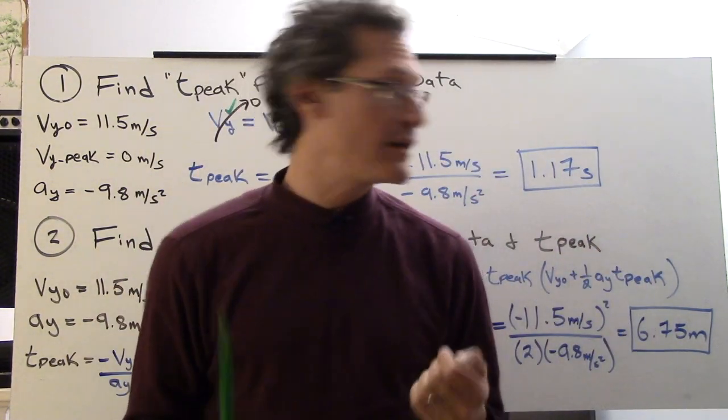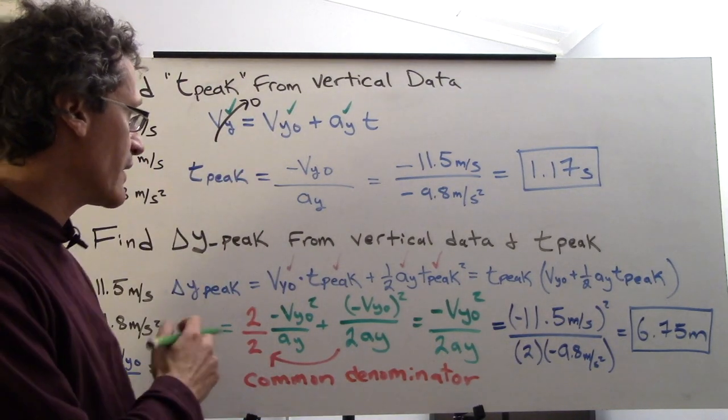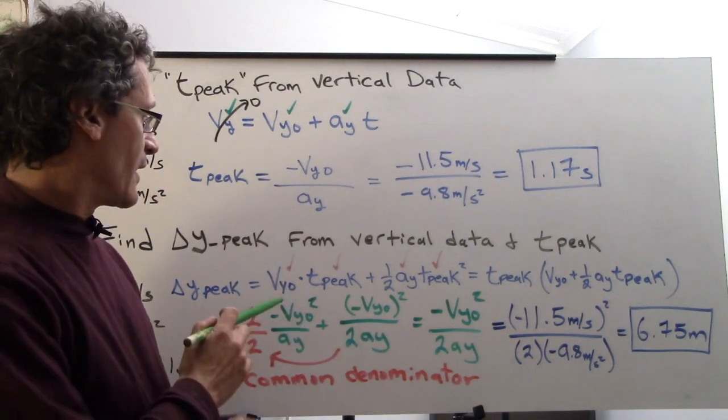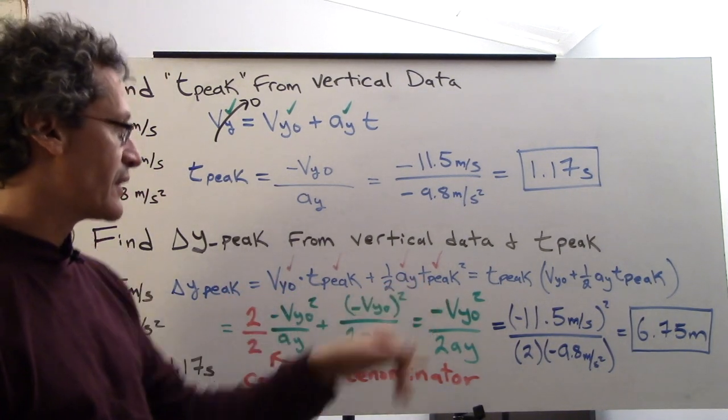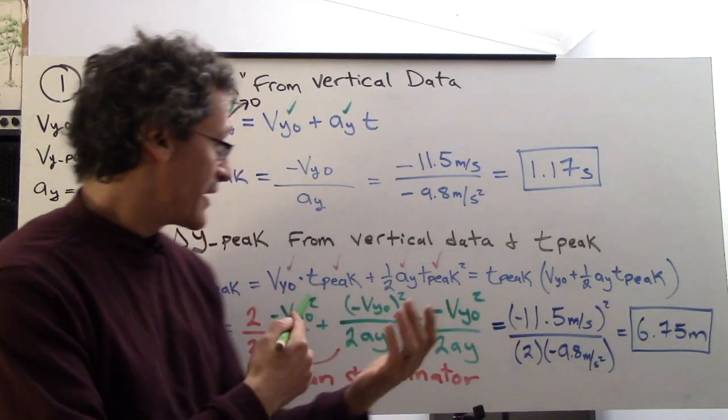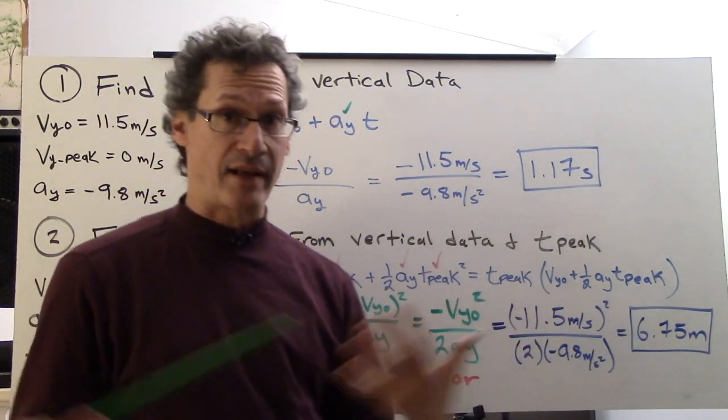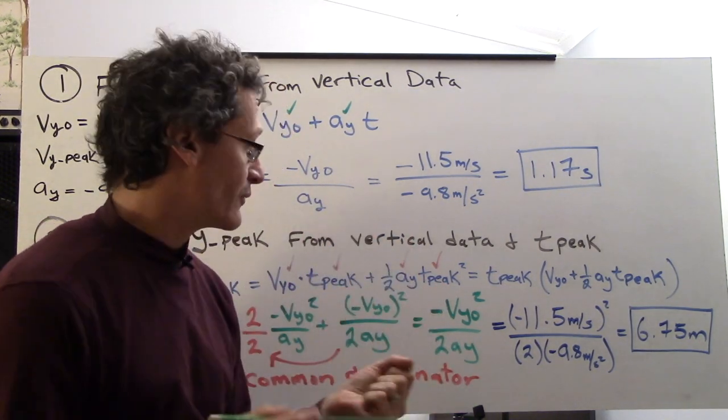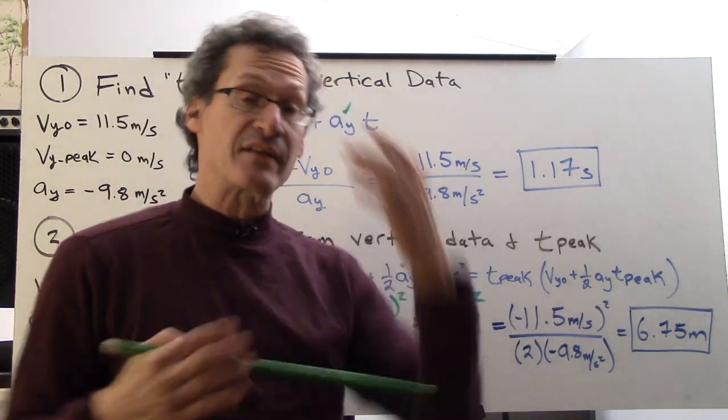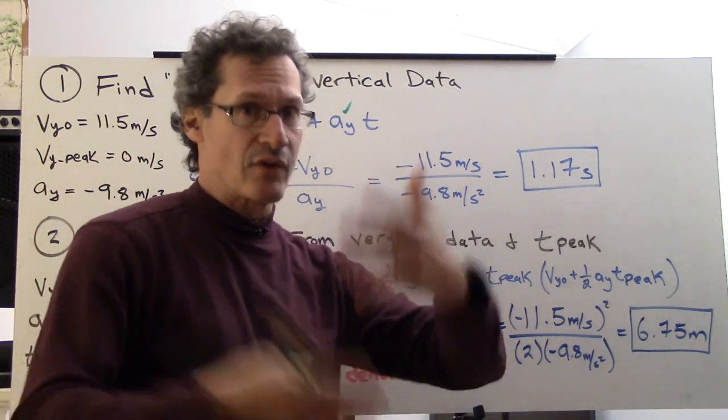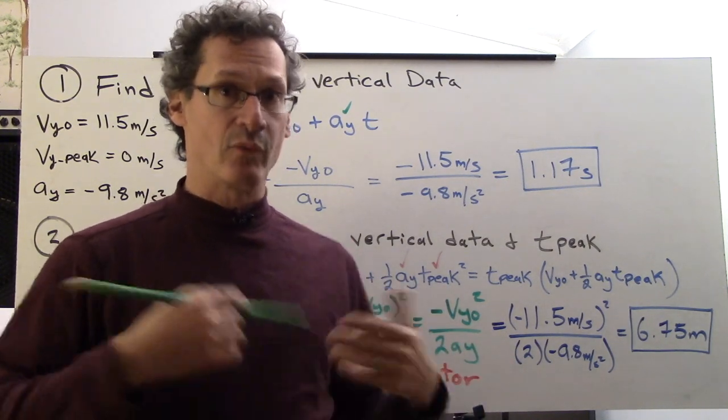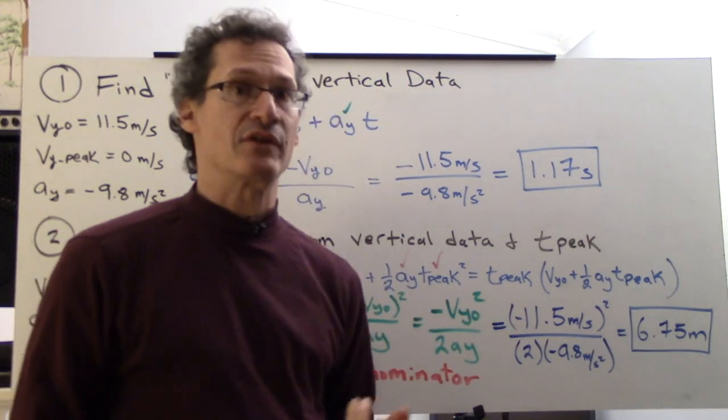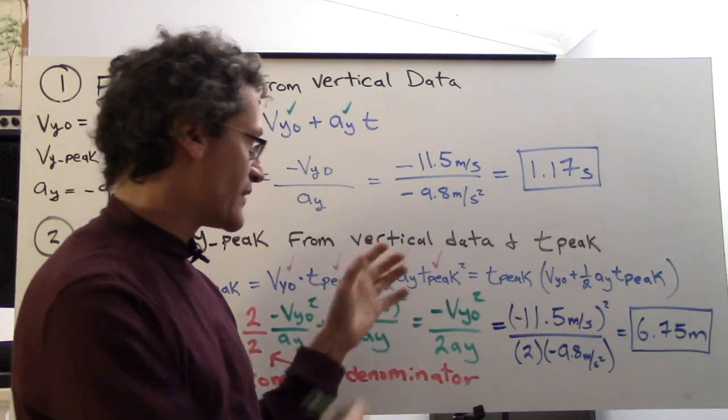Let's find delta y-peak using that information. I decided to choose the second equation with time and a, since we just found time, then why not? vy-naught times t-peak plus one half ay*t-peak squared. Now I can plug it in right there if I were so inclined and get the right answer. I decided to do a little bit of algebra to show you what can be done just by playing around with some of these variables, which is helpful because it will simplify the problem.